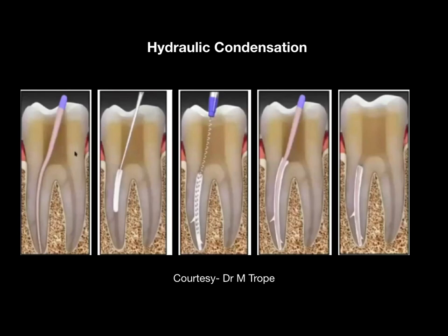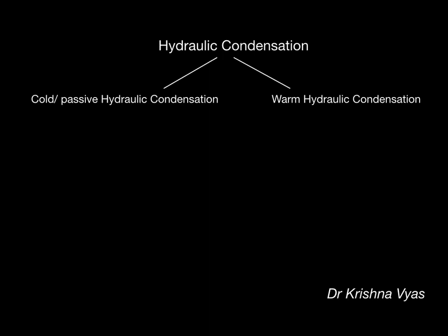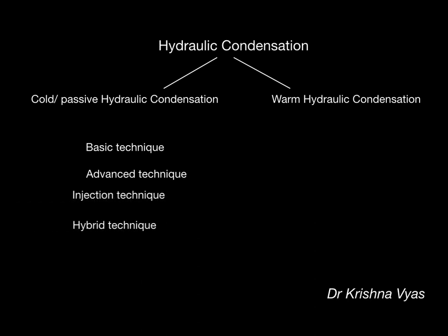Hydraulic condensation is divided into two types: cold (passive) hydraulic condensation and warm hydraulic condensation. Cold passive hydraulic condensation is further divided into basic technique and advanced technique. The basic technique can be performed even without magnification, while the advanced technique benefits from magnification. The advanced technique is again of two types: the injection technique and the hybrid technique, each being a slight variation or modification.